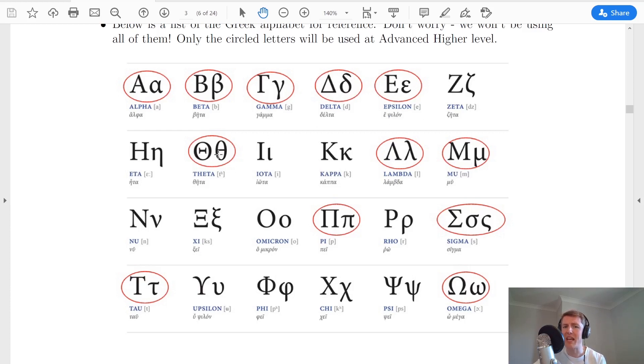We've also got theta, which can mean an angle, lambda, which is your wavelength, mu, which is a prefix of times 10 to the power of minus 6, pi, you should be used to using pi by now